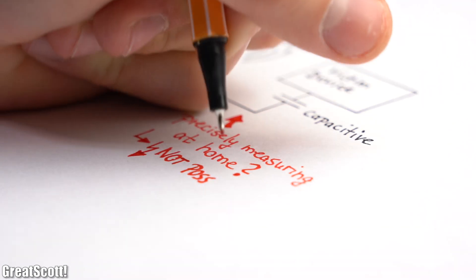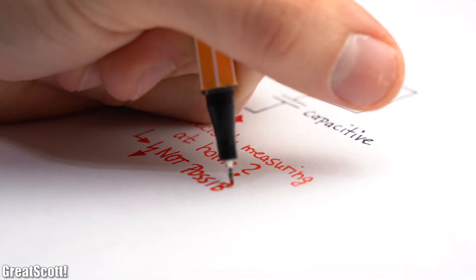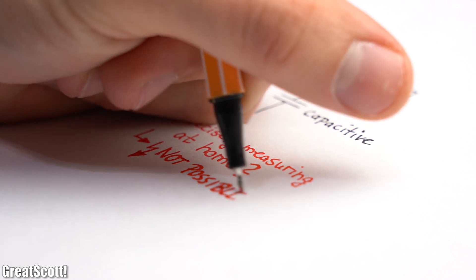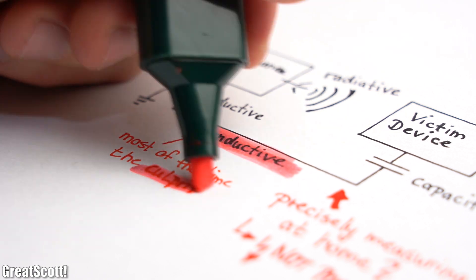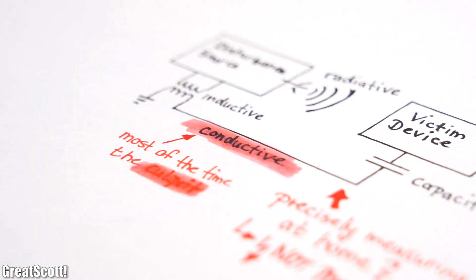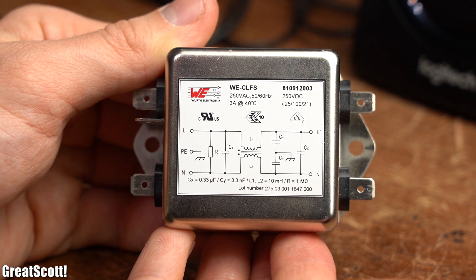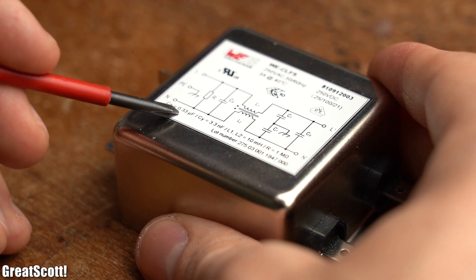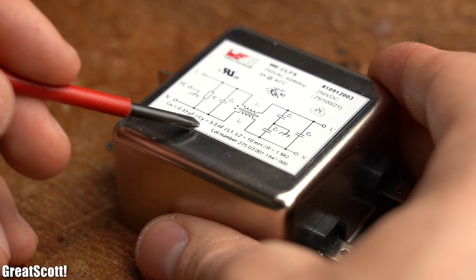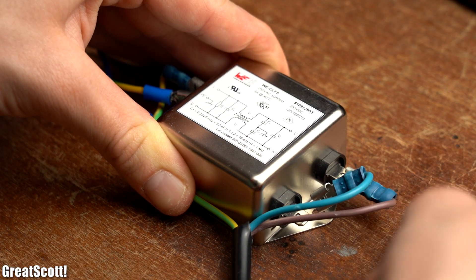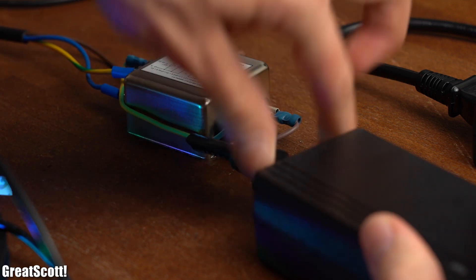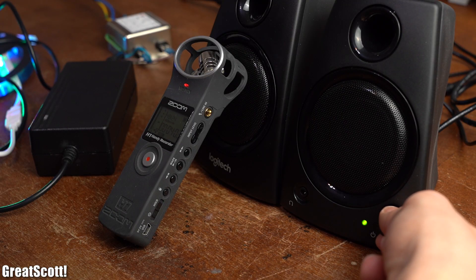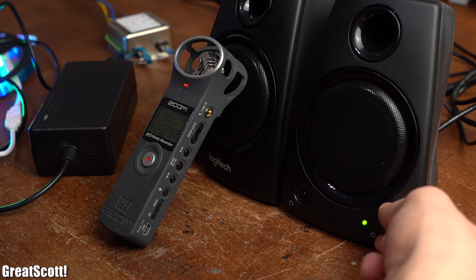Precisely measuring such interferences at home is practically impossible — you need a proper EMC lab for that. But since we know that conductive interferences are most of the time the culprits, we can simply get ourselves an EMC filter. Without paying attention to the component values, we can connect this filter in series to the disturbance source, and with a bit of luck the EMC problems could easily be solved. That was also the case for our example, since the interference noises from our speaker are now completely gone.